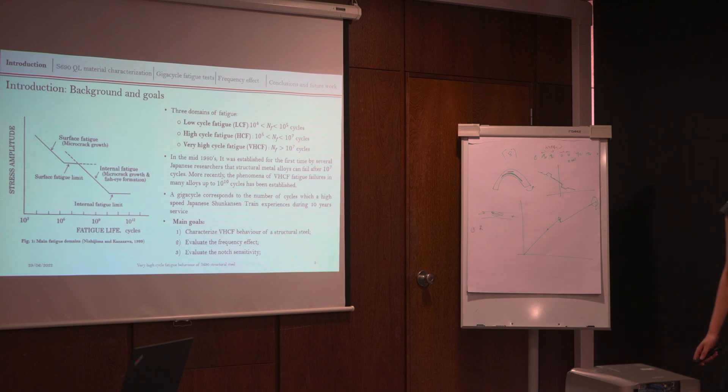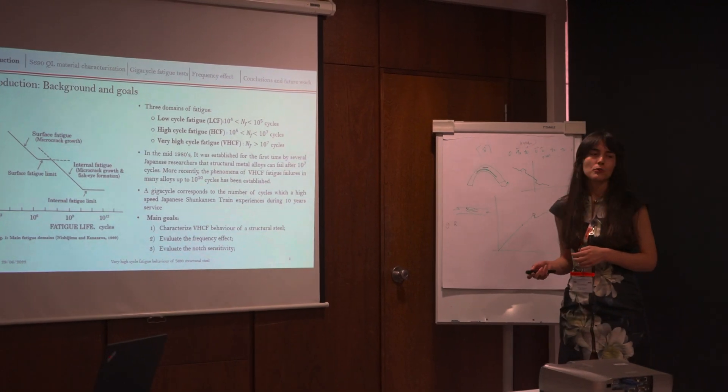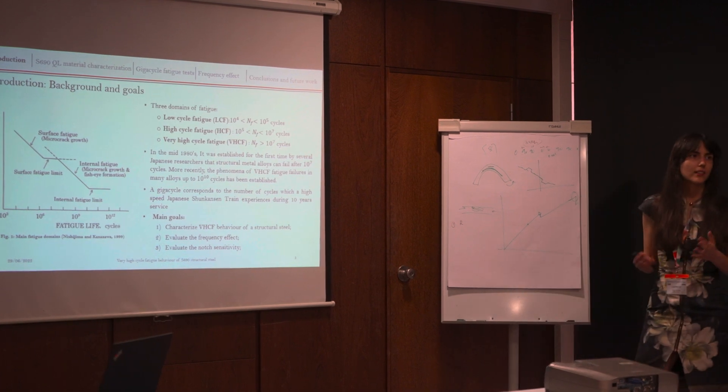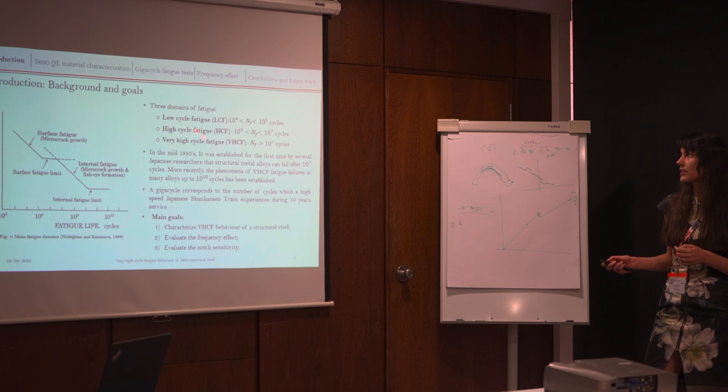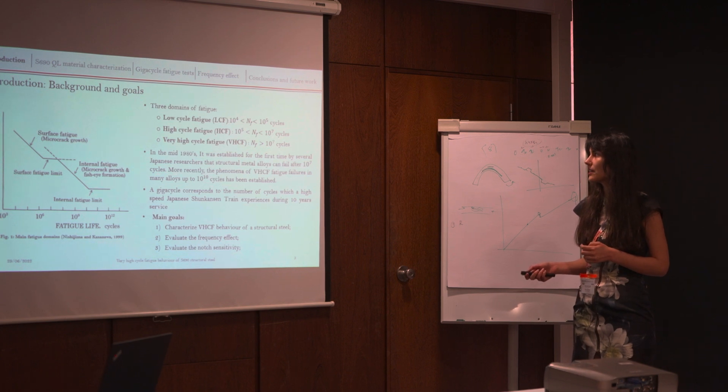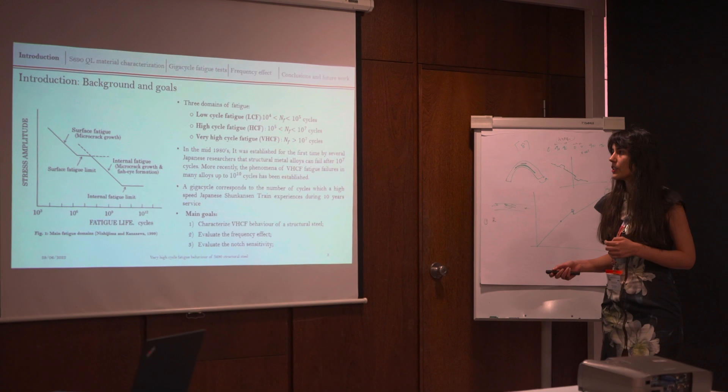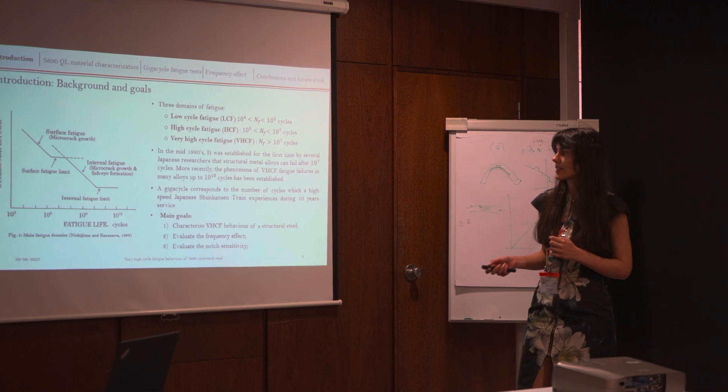I think it's always important to define the main topic of this presentation. I think that most of you already know the different regions of fatigue. We normally have here the low cycle region between 10^4 and 10^5. Obviously, this kind of boundaries can be discussed. Then we have high cycle fatigue region here between 10^5 and 10^7, and we are going to study here the region beyond 10^7.